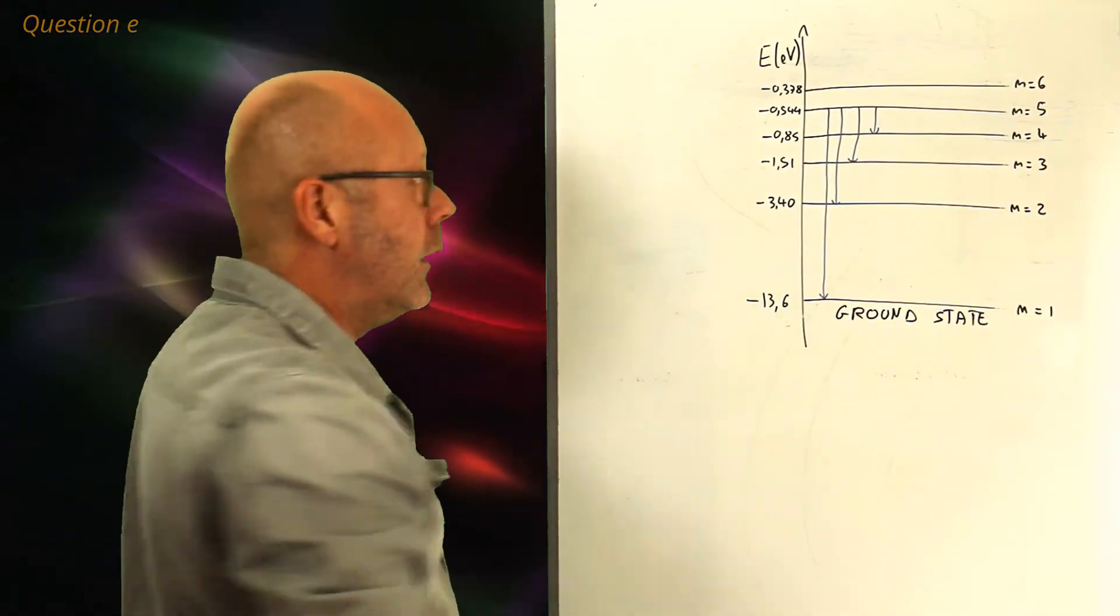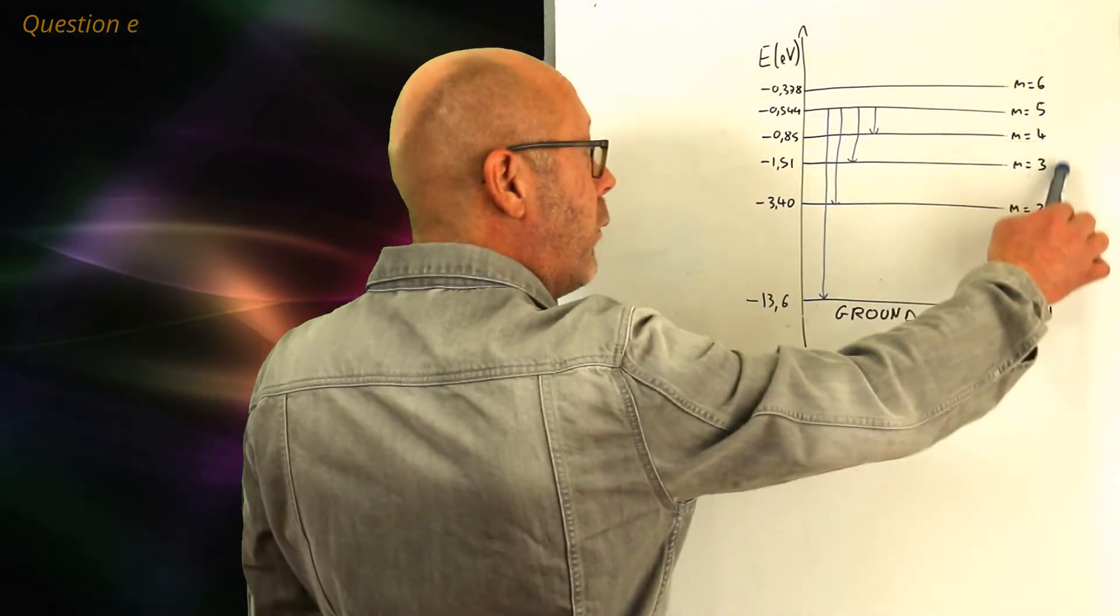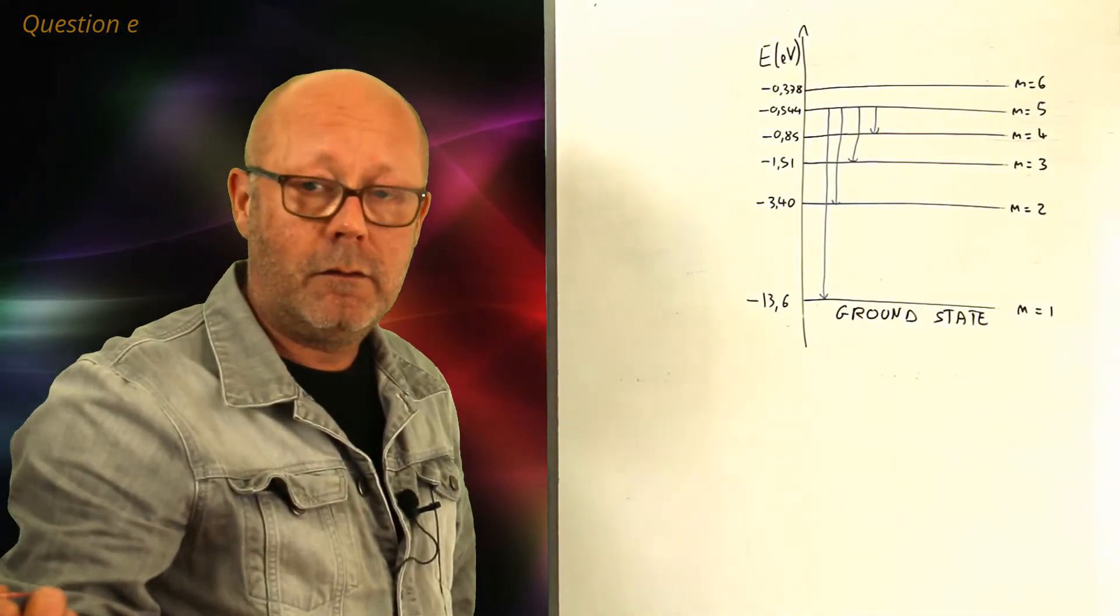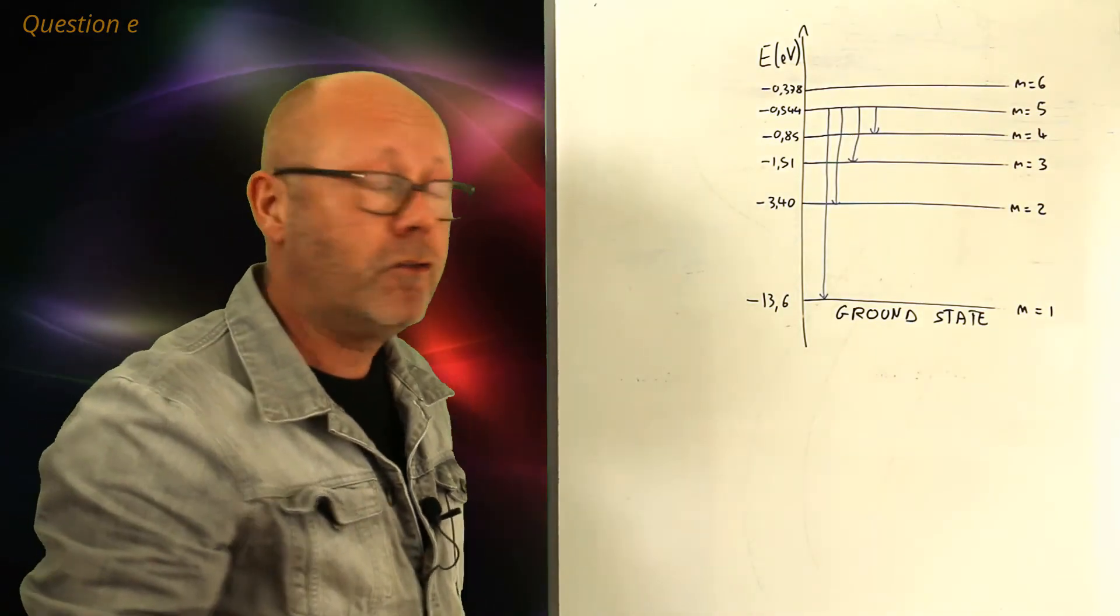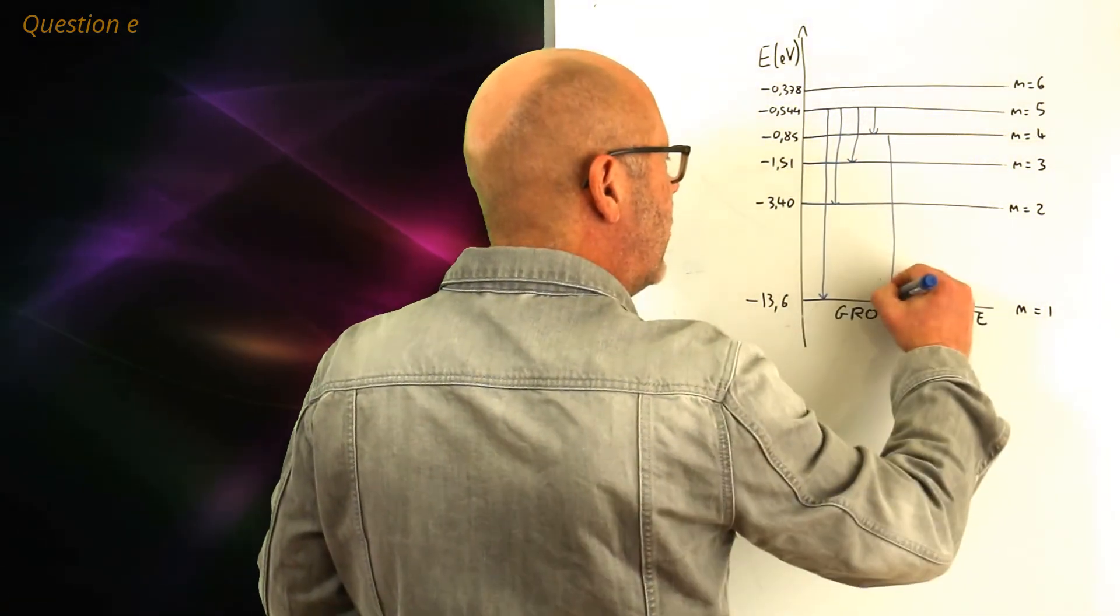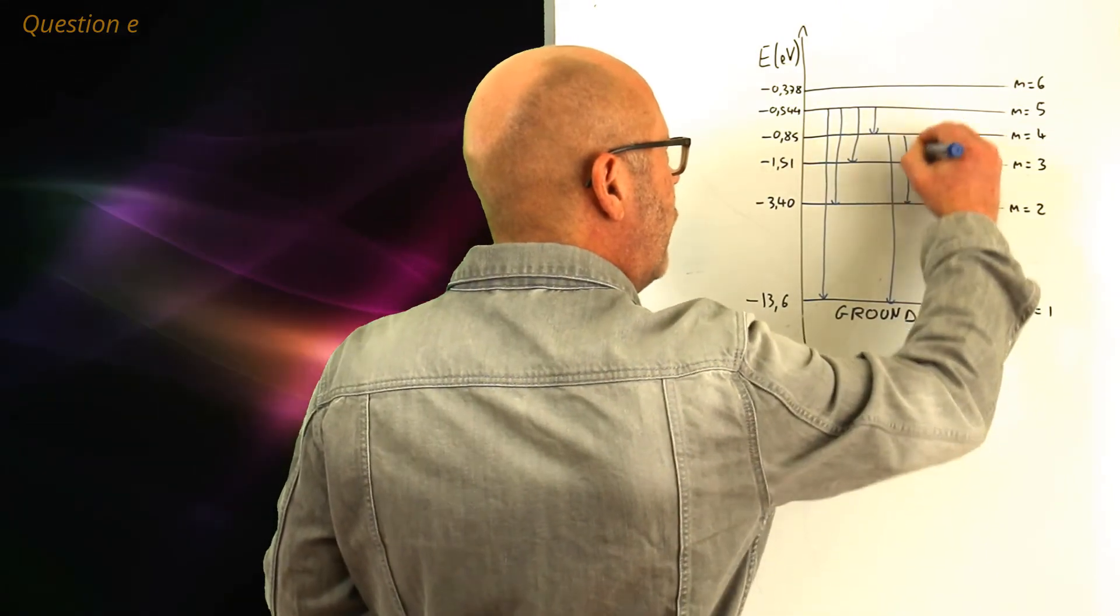But that's not all. Now, the atom can also be on level 4, 3, and 2. Right? So, it can continue losing energy. From, for example, 4 to 1. 4 to 2. Or 4 to 3.